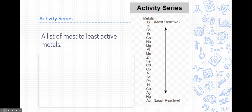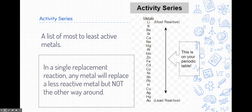The activity series is found on your periodic table. It's a list of metals from most reactive at the top to least reactive at the bottom. In a single replacement reaction, only the more reactive metals will replace the least reactive metals — it won't happen the other way around. So metals at the top replace those at the bottom, but not vice versa.